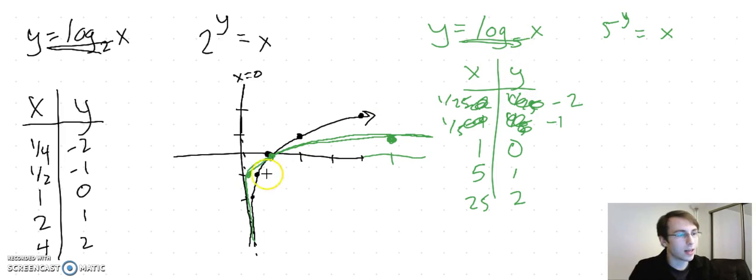The base controls how sharp the turn is. If we take log base of a really big number, the turn is going to be really sharp—going up fast and then diving to the right quickly before becoming flat. If we take log of a smaller base, it's going to be a more gradual turn.